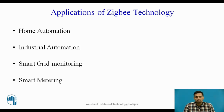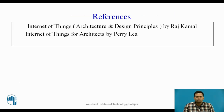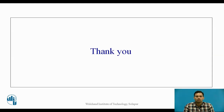Zigbee modules are very useful in wireless sensor networks and for controlling devices. They are effective, low cost, and require very low power, making them efficient compared to other technologies like Bluetooth, Wi-Fi, RFID, and NFC. While preparing this video lecture, I have used 'Internet of Things: Architecture and Design Principles' by Raj Kamal and 'Internet of Things for Architects' by Perry Lee. Thank you.